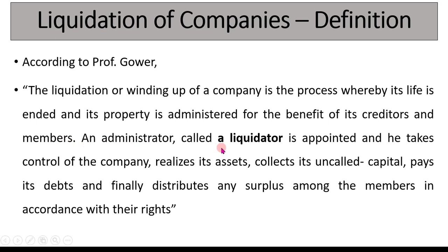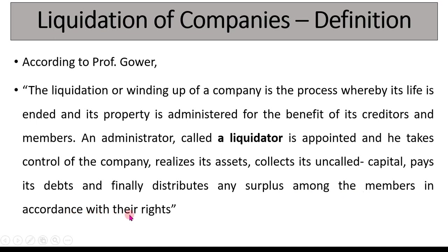An administrator called a liquidator is appointed. Whatever assets are realized, the liquidator is going to make the payment to the creditors. A liquidator is appointed and takes control of the company. In the process of liquidation, this person — called the liquidator — will take over all control of the company, realize the assets, collect uncalled capital, pay its debts, and finally distribute any surplus amongst the members in accordance with their rights.